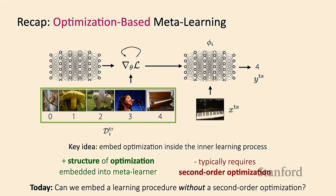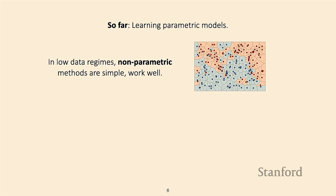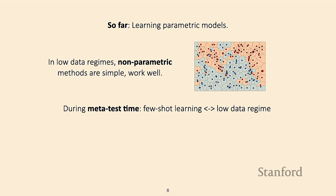What we'd like to do today is embed a learning procedure into the inner loop of meta-learning algorithms without requiring second-order optimization. Instead of embedding gradient descent, we'll look at algorithms like nearest neighbors. While nearest neighbors isn't typically considered powerful, these non-parametric machine learning methods actually work pretty well in a low data regime. At meta-test time during few-shot learning, we are in a low data regime, so things like nearest neighbors make a lot of sense.